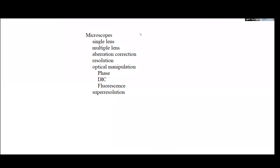So we have this progression of microscopes going from single to multiple lenses, all the way through various levels of sophistication. Also left out in a formal way is the idea of the use of the electron microscope, but we'll get to all of that with time.